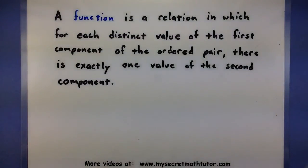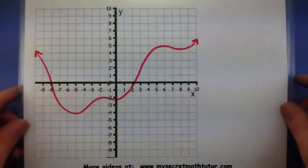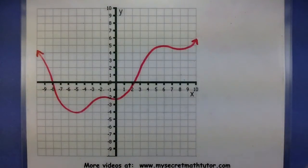In the actual definition of a function, we have to determine if every first component gets paired with exactly one value of the second component. And on a graph, your first component represents an x value, and your second component represents a y value. Here's why that's important.